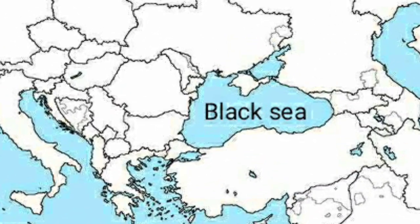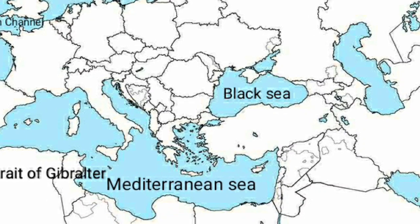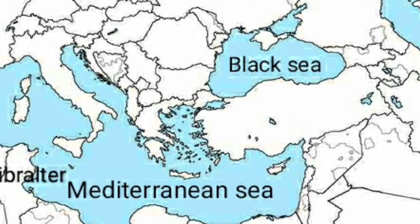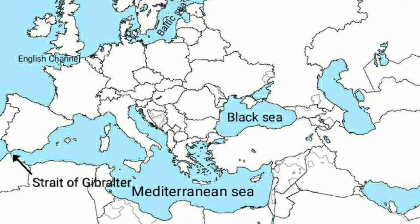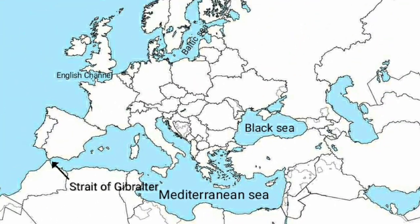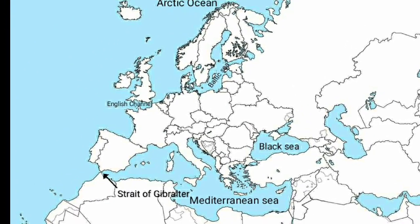The Strait of Gibraltar is a narrow path of water that separates Europe from Africa. Next, we have the Black Sea, which is an entirely landlocked lake. And last but not the least, the most important water body of Europe — the Mediterranean Sea. This map shows the water bodies of Europe. Colour all the water bodies using blue pencil colour.